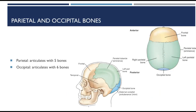Moving on to the parietal bones — the parietal bones articulate with five cranial bones: the frontal, the occipital, the temporal, the sphenoid, and the opposite parietal bone. The parietal bones form the lateral walls and part of the roof of the cranium. The widest portion of the entire skull is located between the two parietal tubercles of the two parietal bones.